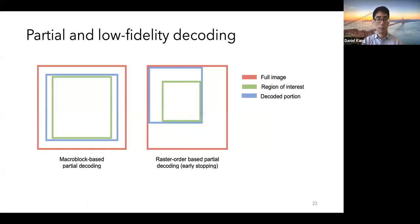Smol also leverages partial and low fidelity decoding. What I'm showing here in red is the full image, in green the region of interest that we care about for a particular visual analytics task, and in blue the decoded portion of the image for two different ways of doing partial or low fidelity decoding. And the key idea here is that we only decode parts of the image that are necessary.